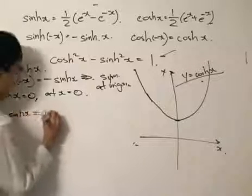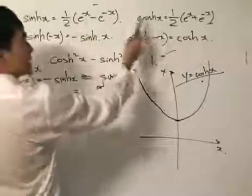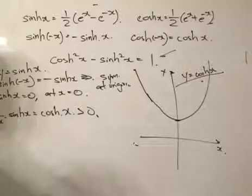We get cosh x. But again, what do we know about cosh x? Cosh x would be more than 0, right? So in this case, the sinh x function is always increasing.